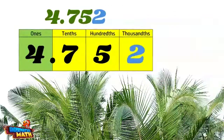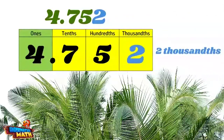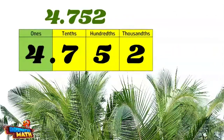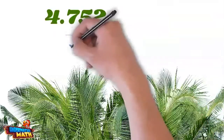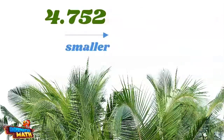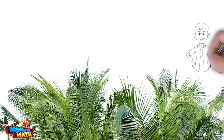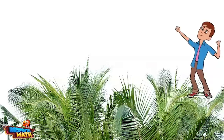If you guessed two thousandths, you were correct. Each place to the right of the decimal point is one tenth of the value of the place to its left. This means that the more places to the right of the decimal point you are, the smaller your number is. Thanks for adventuring with me — I hope to go on another adventure soon.